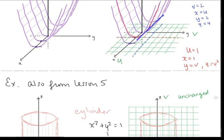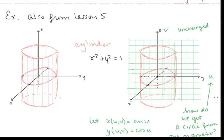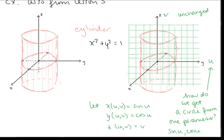Let's take a look at another example. Also from Lesson 5, we had our traditional cylinder defined by x squared plus y squared equals 1. This time, to show the mapping, I want to think about the uv plane as the y, z plane — wrapping it around that cylinder. To get circular motion from a single variable u, we're going to use sine u and cosine u. So let x equal sine u and y equal cosine u, giving us that circle. Then let z be v, giving us a mapping from the uv plane into our cylinder.